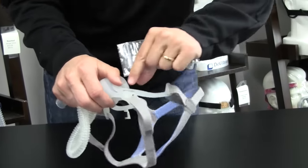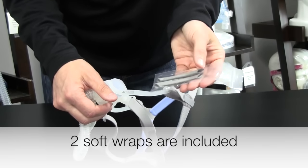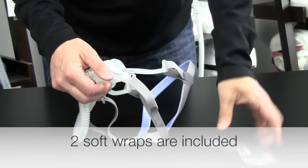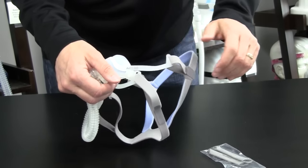They also include, since this is a pliable plastic right here, these little straps. This comes with the mask, these little cushions, and they fit right over here. That way you won't get lines on your face. It helps pad the whole thing.